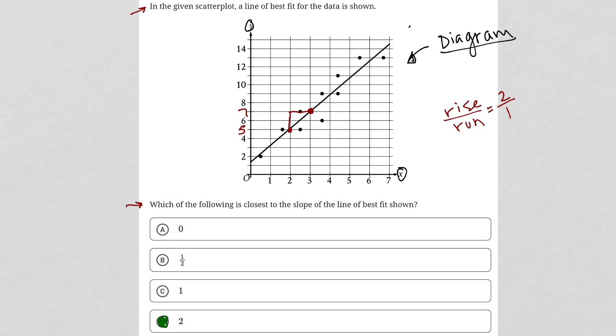Alternatively, you could use the formula y2 minus y1 over x2 minus x1, using the exact same points I used where this point is (3,7) and this point is (2,5). Or you could use any other point that's fairly close on the line.